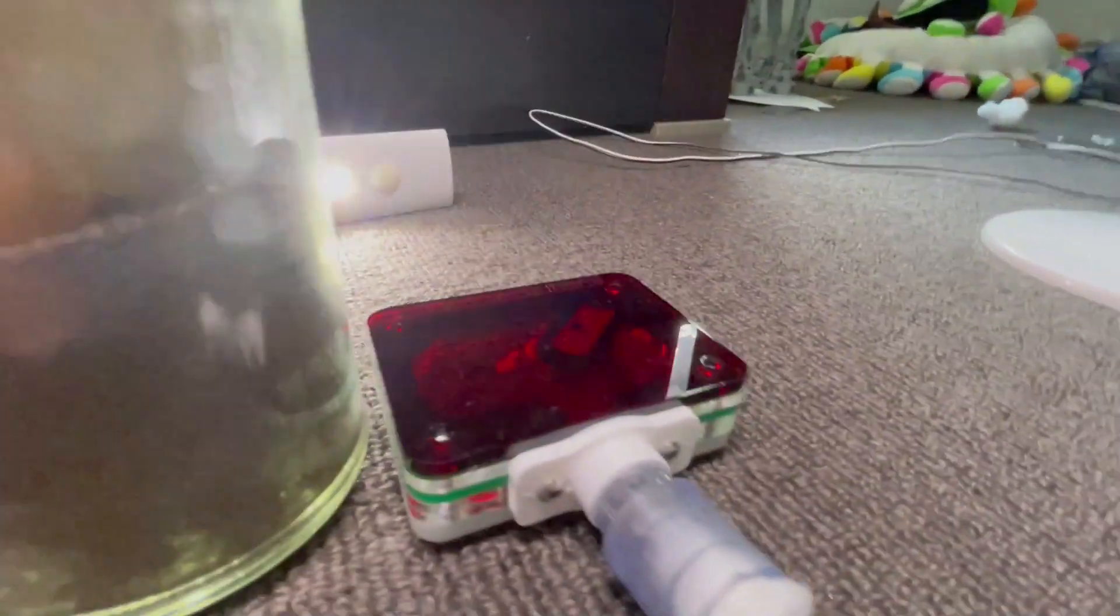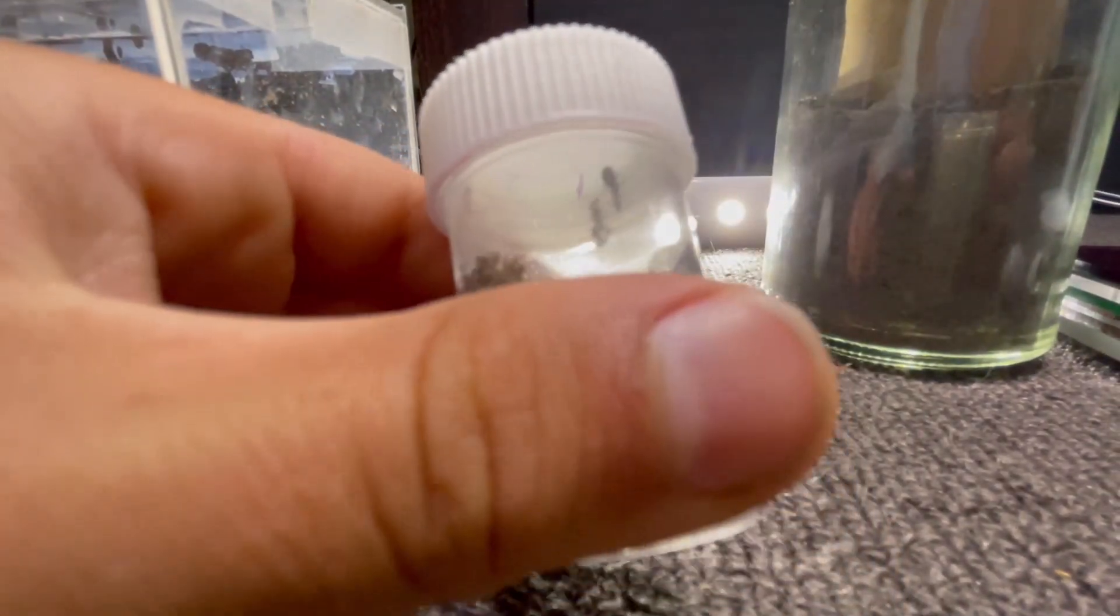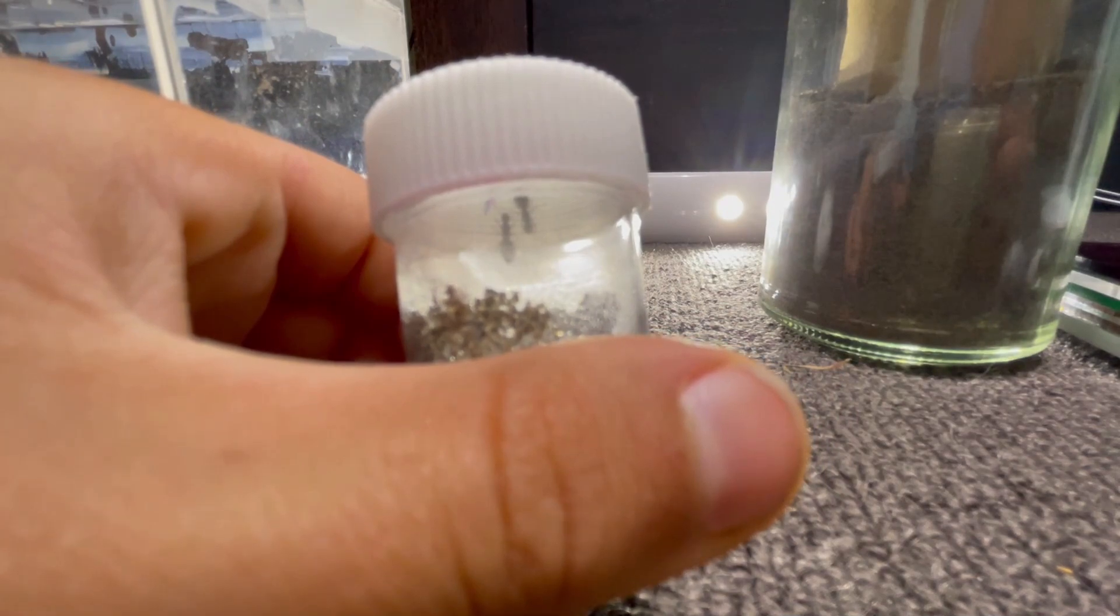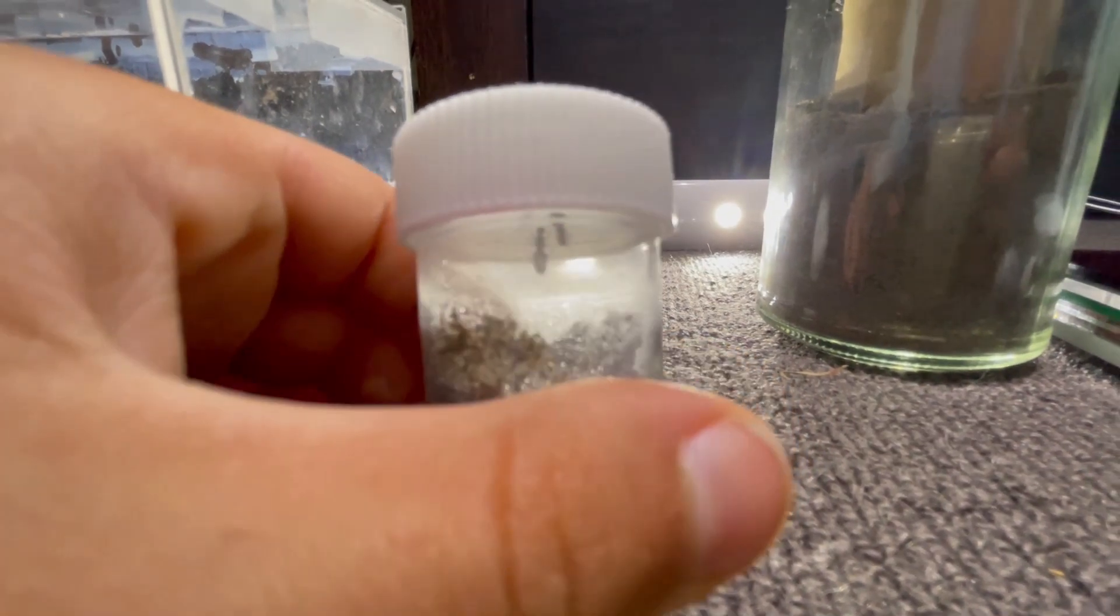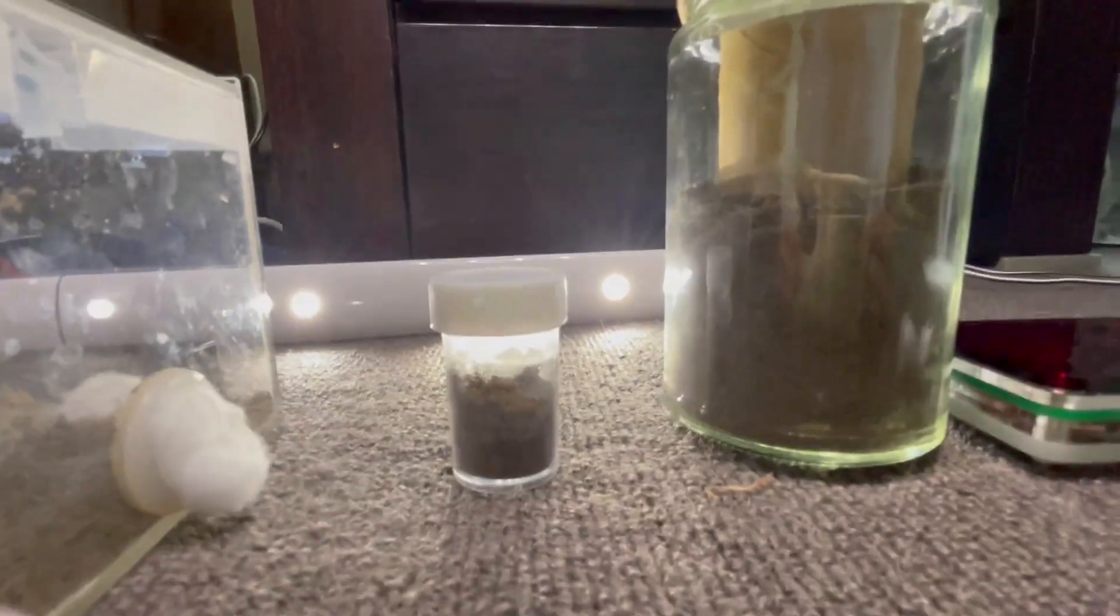Anyway moving on to this small vial. Inside are two Iridomyrmex purpureus queens and hopefully they'll grow a big strong colony, probably even brood boost.